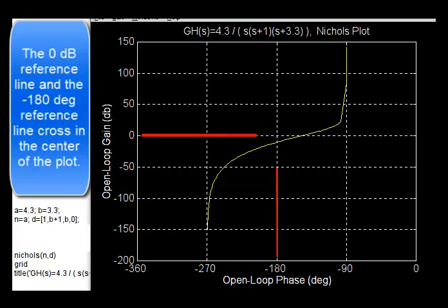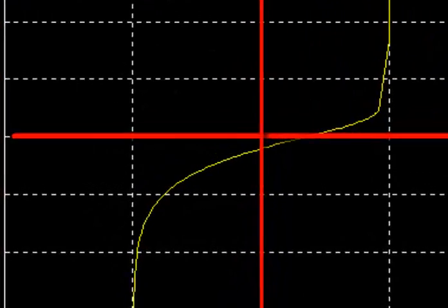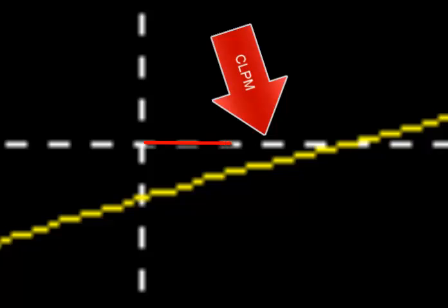0 dB reference line and negative 180 degree reference line cross in the center of the plot. That's the closed-loop gain margin. And that's the closed-loop phase margin.